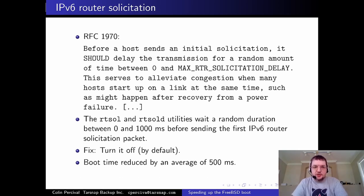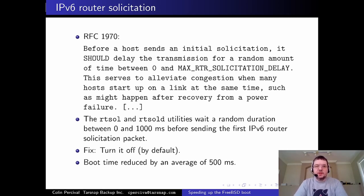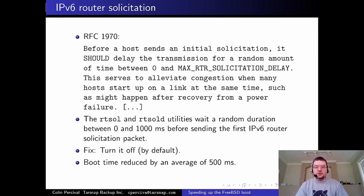RFC 1970 says a host should delay a random amount between 0 and max RTR solicitation delay — up to 1 second — before sending an IPv6 router solicitation, to alleviate congestion when many hosts start up simultaneously. In practice, on gigabit or 10-gigabit networks you'd need hundreds of thousands of hosts to cause congestion from these tiny packets. So I turned off that random delay by default, saving an average of 500 milliseconds.